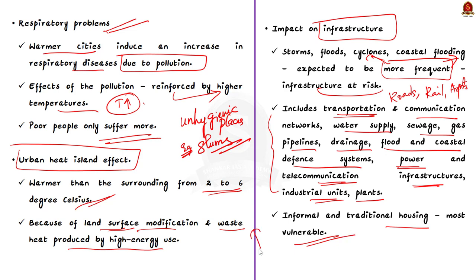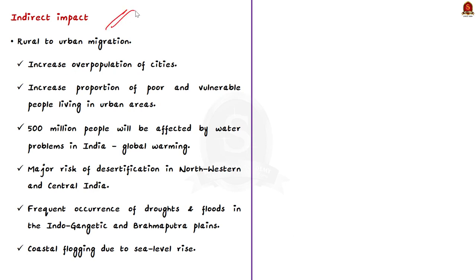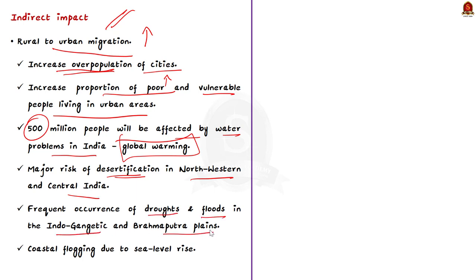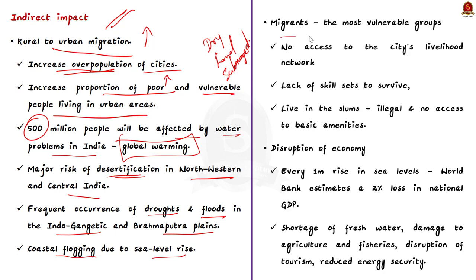So far we discussed the direct impacts of climate change on urban areas. Now let us see some indirect impacts. Climate change-related droughts and floods are expected to increase rural-to-urban migration, which will in turn increase the overpopulation of cities and the proportion of poor and vulnerable people living in urban areas. It is estimated that 500 million people are going to be affected by water problems in India because of global warming. There is a major risk of desertification in northwest and central India, frequent droughts and floods in the Indo-Gangetic and Brahmaputra plains, and coastal flooding due to sea level rise in the near future.